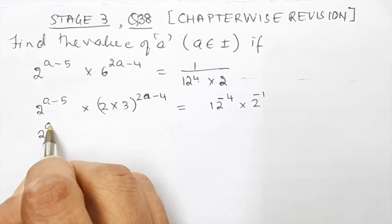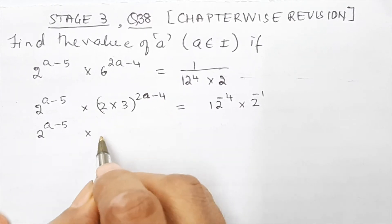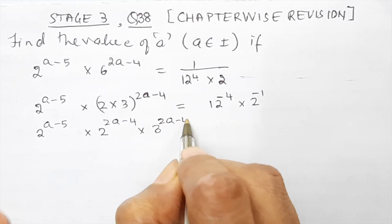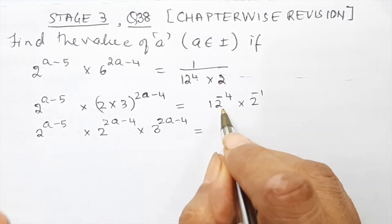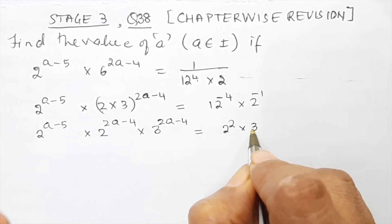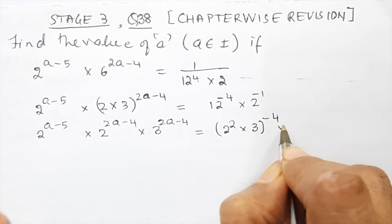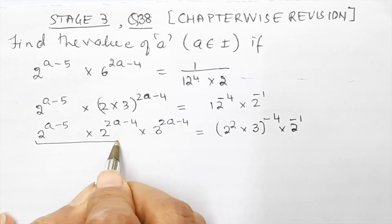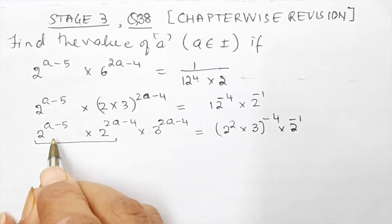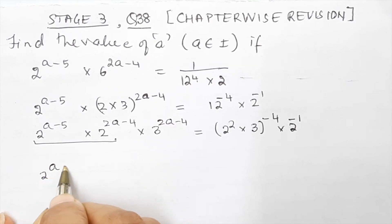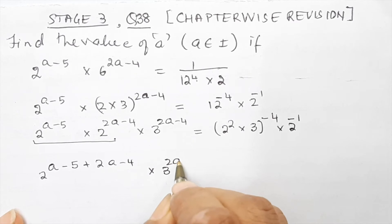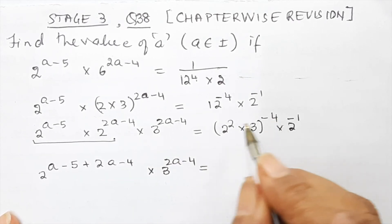Now we will take 2 to the power (a minus 5) and apply this power for each one of these bases. So we get 2 to the power (2a minus 4) into 3 to the power (2a minus 4), and that will be equal to — here we will take 12 as 4 into 3, but 4 is 2 squared. So we write 2 squared into 3, meaning 12 to the power minus 4 into 2 to the power minus 1. Now we will take the powers of base 2 together: 2 to the power (a minus 5) into 2 to the power (2a minus 4).